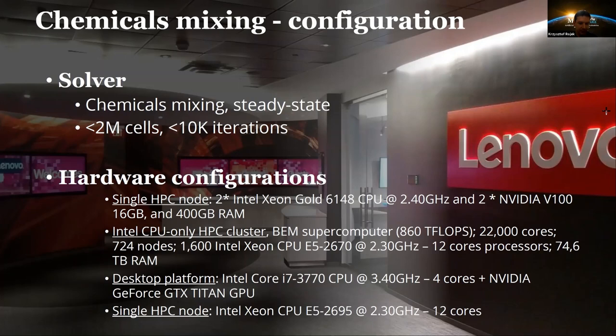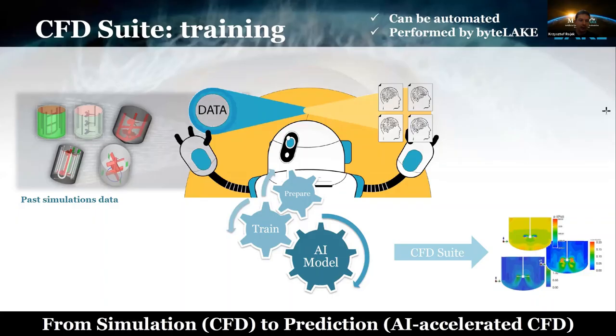The Intel Xeon Gold CPUs are equipped with 20 cores per CPU. We also compared with a desktop platform containing Intel Core i7 clocked at 3.4 GHz with 4 cores and an Nvidia GeForce GTX Titan GPU, and a single HPC node with Intel Xeon CPU E5-2695 clocked at 2.3 GHz with 12 cores.